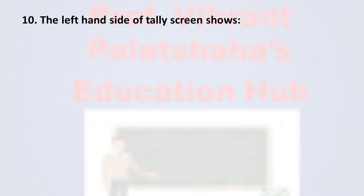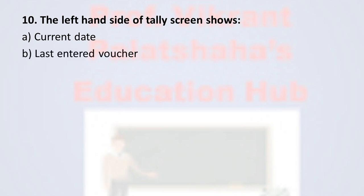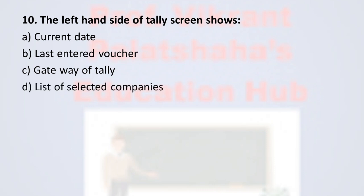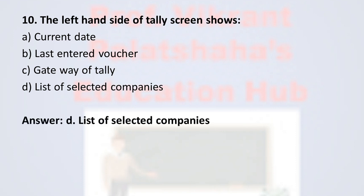Question number ten: The left-hand side of the Tally screen shows — Option A: Current Date, Option B: Last Entered Voucher, Option C: Gateway of Tally, Option D: List of Selected Companies. The correct option is Option D, List of Selected Companies. The left-hand side of the Tally screen always shows the list of selected companies, therefore the correct option is Option D.